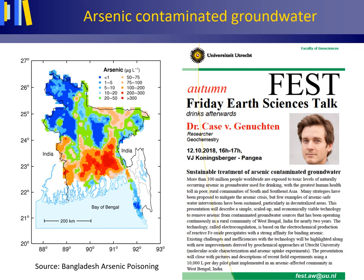The US Environmental Protection Agency sets an arsenic maximum contaminant level for public water supplies at 10 micrograms per liter. This figure shows concentrations over 10 micrograms per liter for large parts of Bangladesh, with even values over 300 micrograms per liter. The sustainable treatment of arsenic-contaminated groundwater by a removal technique called electrocoagulation has been the topic of a Friday evening science talk by Dr. Kees van Genuchten at the Faculty of Geosciences, Utrecht University. Hopefully these talks can be resumed after the COVID-19 pandemic.